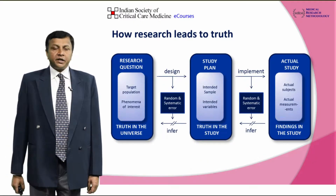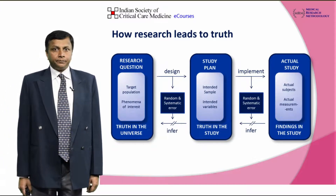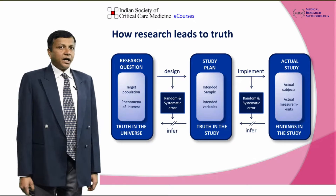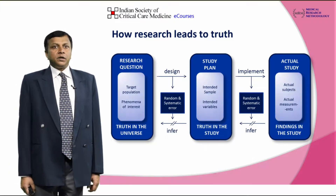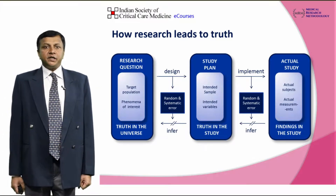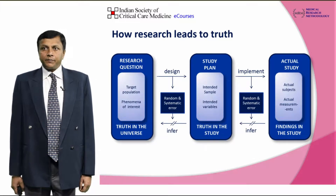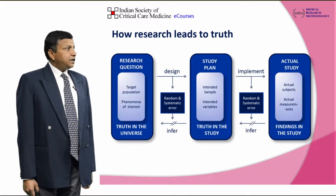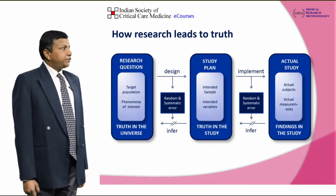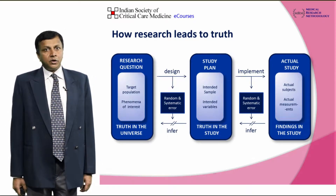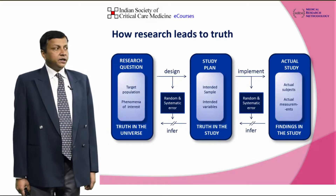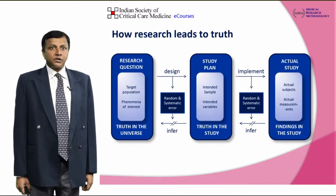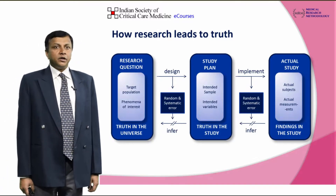As you know, the aim of every research is to know the truth, and truth exists somewhere in the universe but is unknown to anybody. Therefore, a researcher identifies the target population on whose objectives his study is based, then chooses his phenomenon of interest. The process by which the intended sample is chosen from this target population and the intended variables are identified from the phenomenon of interest constitutes what we call the design. So if the design is faulty, the truth in the study is not going to reflect the truth in the universe, and therefore the basic purpose of research — to know the truth — goes unfulfilled.